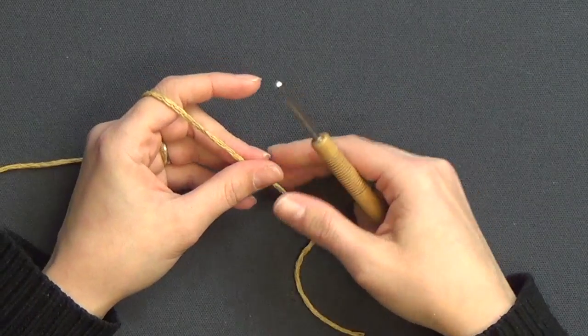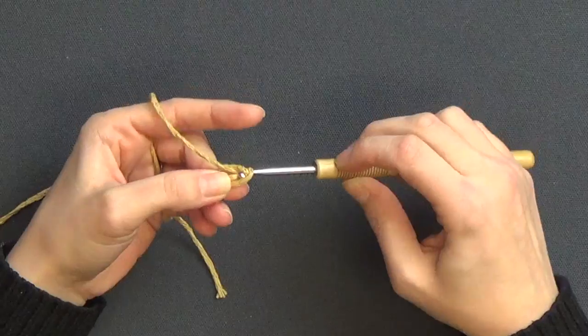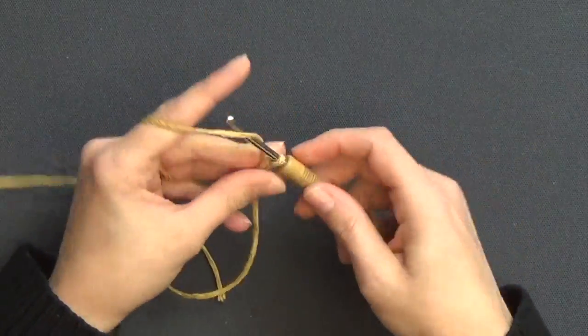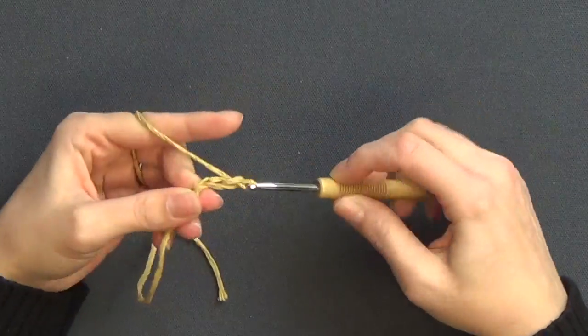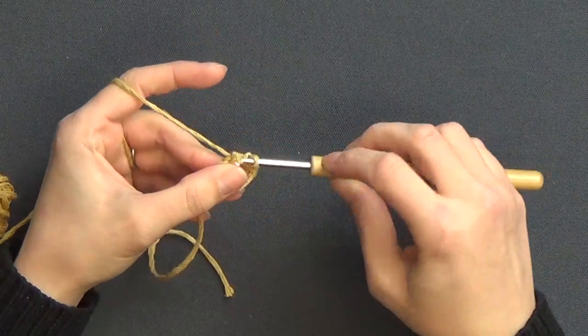To do that you're going to take color A and you're going to chain six. You're going to slip stitch to the first chain to form a circle.